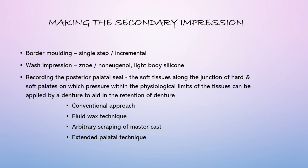For the secondary impression, the first step is border molding. It is done in two ways: single step or incremental. In single step, you adapt green stick compound — or polystyrene or putty — over all borders: the labial area, buccal frenum area, tuberosity area, and PPS area. You place it in the patient's mouth and briskly perform all functional movements, moving the upper lip and cheeks to record all areas.